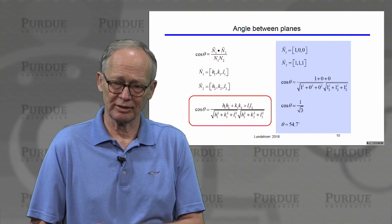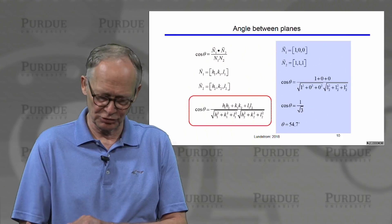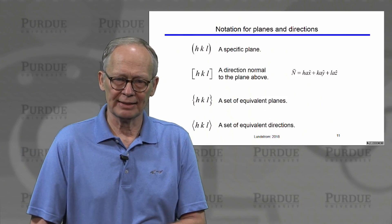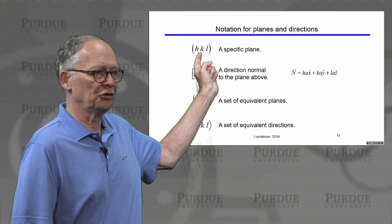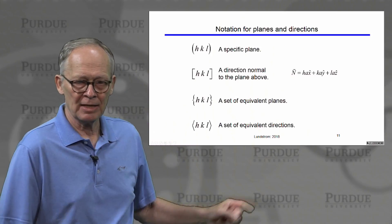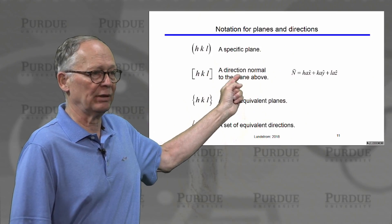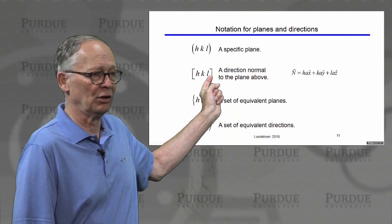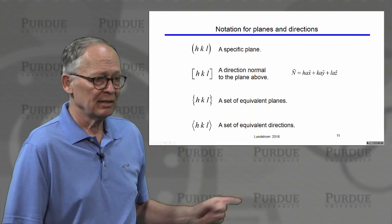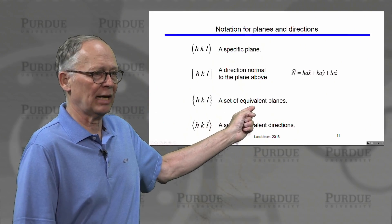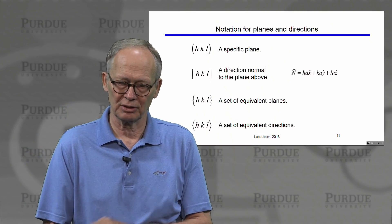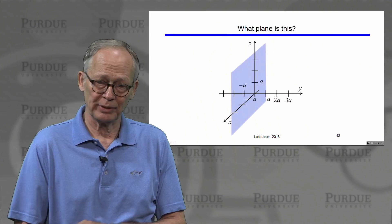This is something that can actually be produced by various types of etchants in silicon. Our notation is that planes are described by three integers in parentheses for a specific plane. The direction normal to the plane is given by the vector [h, k, l] in square brackets. There is also a way to describe a set of equivalent planes and equivalent directions, with a slightly different notation.